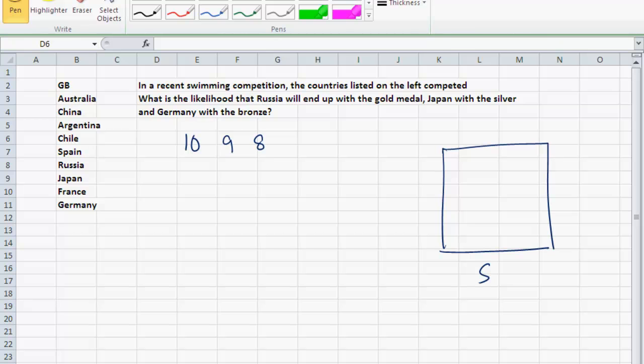So the total number of alternatives, sequences of countries that could end up with gold, silver, bronze, is ten times nine times eight. I'm looking for the likelihood that Russia will end up with the gold, Japan with the silver, and Germany with the bronze. Only one out of the 720 options represents the sequence that I'm looking for. So my probability is simply one over 720.